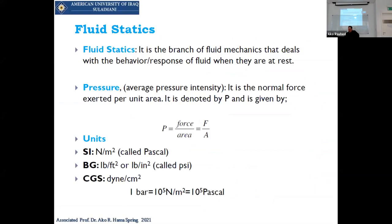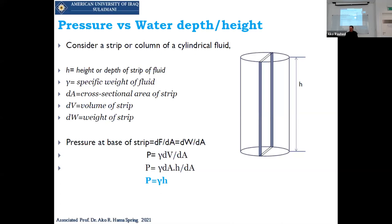The units of pressure can be expressed as a column of liquid height. This is called static pressure — static because the liquid is at rest. The derivation gives P = gamma × h. This is also the basis for Pascal's Law.